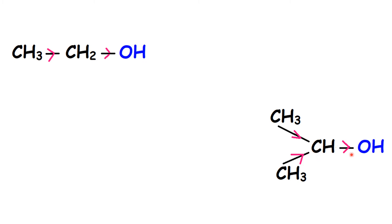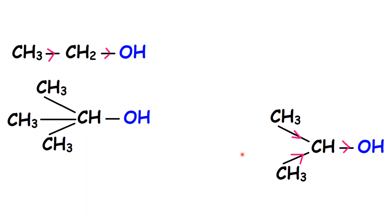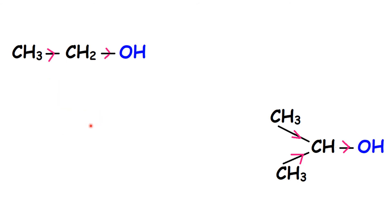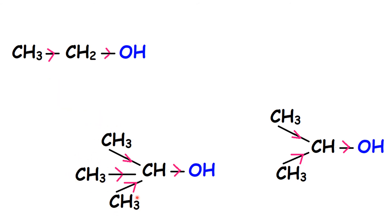In isopropyl alcohol, three carbon atoms and three alkyl parts donate electrons to the OH group. In the case of ethanol, there are only two carbon atoms donating electrons to the OH group. For tertiary butyl alcohol, three methyl groups are attached to the carbon containing OH, so one, two, three, four carbon atoms or alkyl parts donate electrons to the OH group. It is a tertiary alcohol.